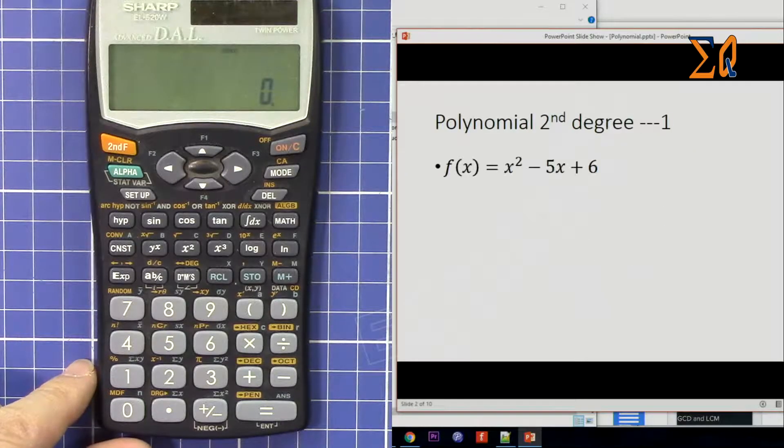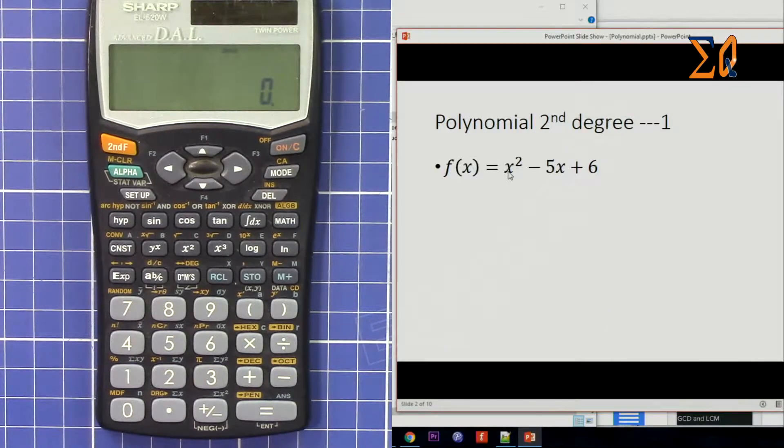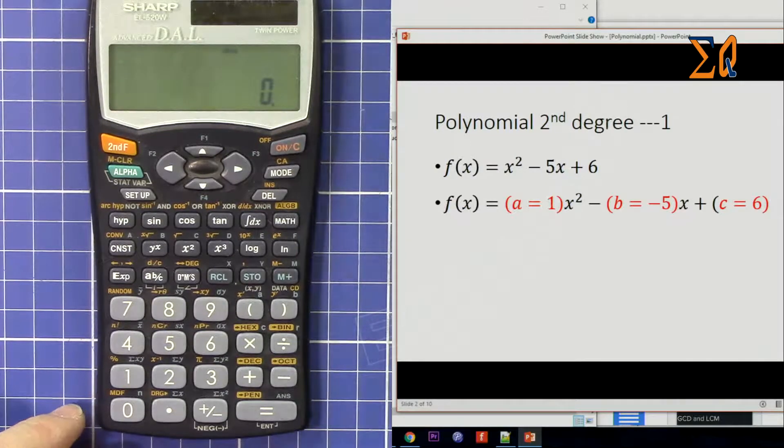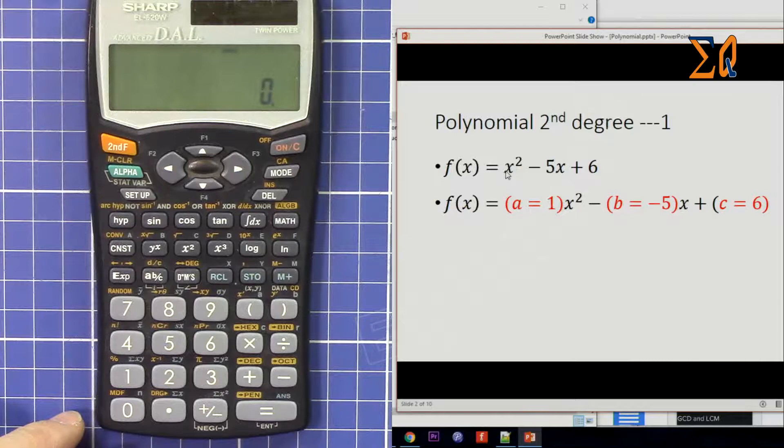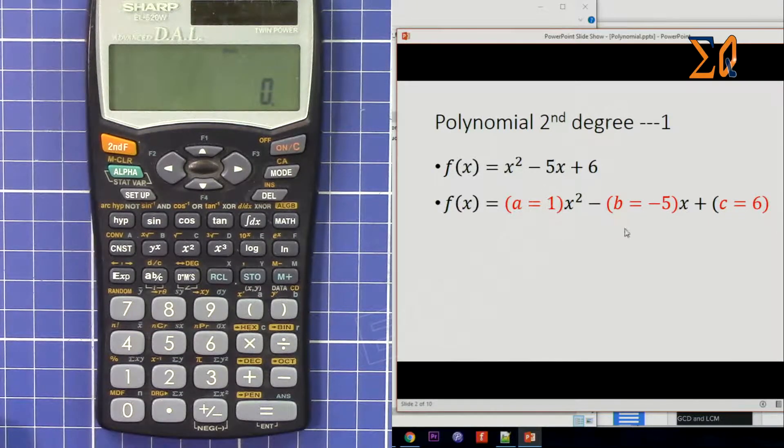So let's say we have this equation f(x) = x² - 5x + 6. We have the coefficients in the ax² + bx + c format. If you write it that way, a is 1, b is -5, and c is 6.